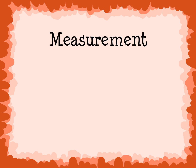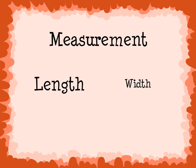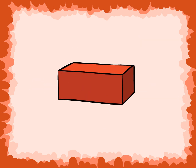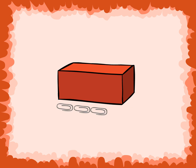Measurement: length, width, and height. Length is how long an object is. Width is how wide an object is, and height is how tall an object is. We can measure with a group of objects such as paper clips.